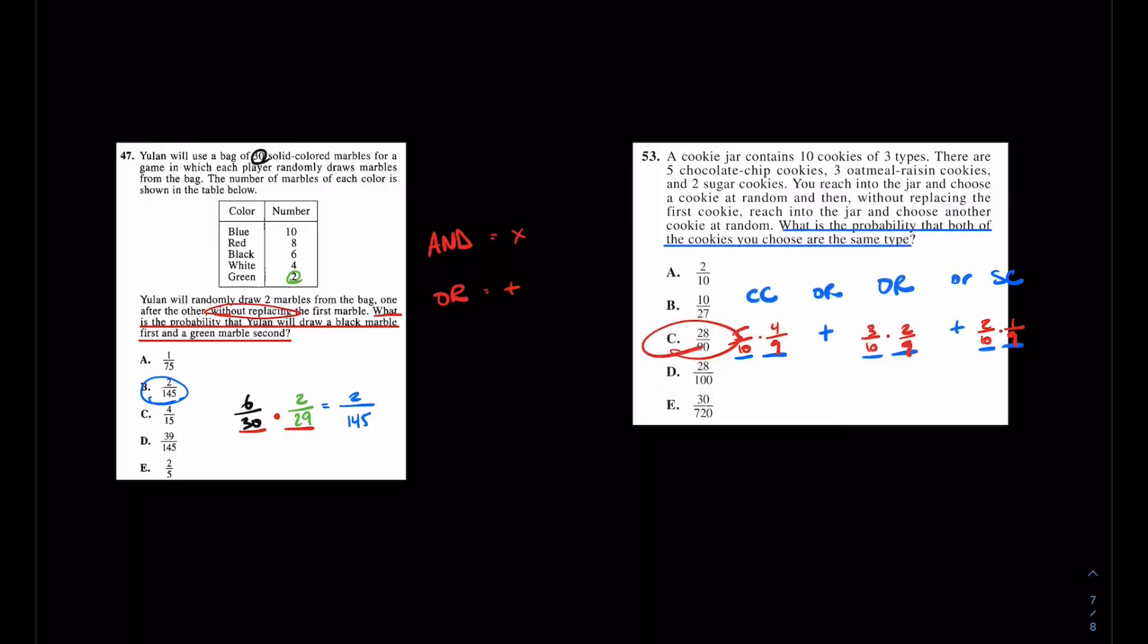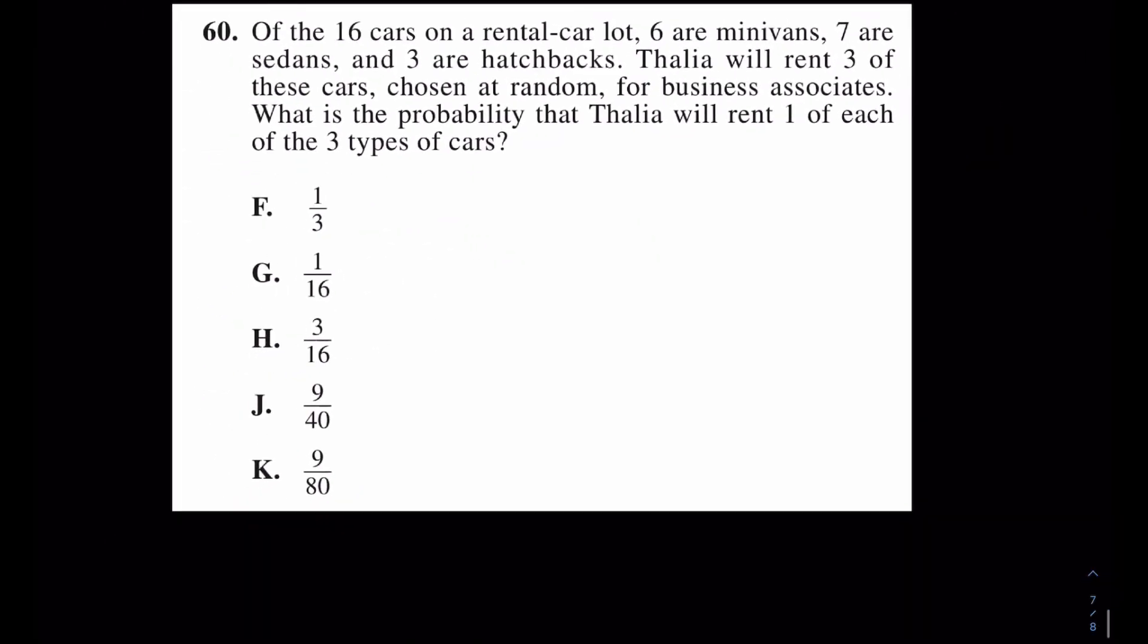So, we'll move on to the last question here, which is down here, number 60. I would argue this is the hardest one. This is, again, from a recent ACT, I think a 2021. But this one's really tough. I'll let you pause here and try this question by yourself if you'd like. But if you'd rather just watch along, you can do that as well. It says, of the 16 cars in a rental car lot, 6 are minivans, 7 are sedans, and 3 are hatchbacks. Talia will rent 3 of these cars. What is the probability that Talia will rent one of each of these three types of cars? So, she wants to draw three cars, and she wants one of each.